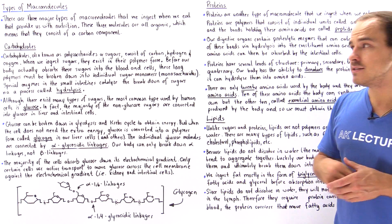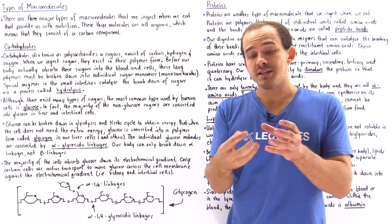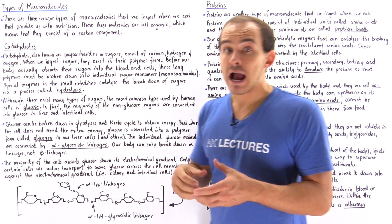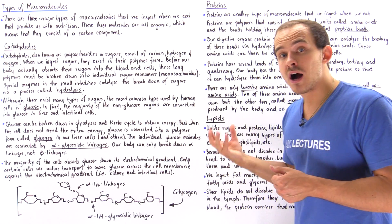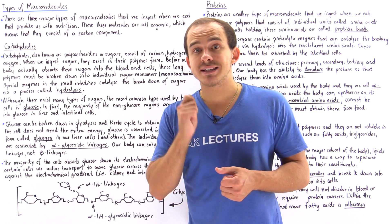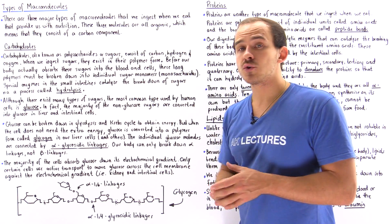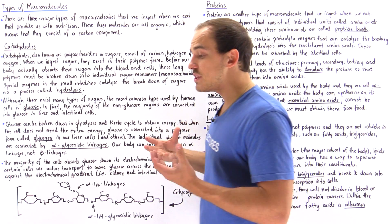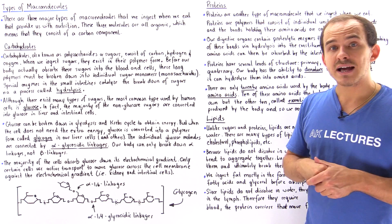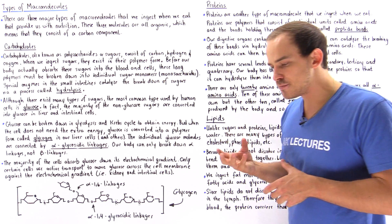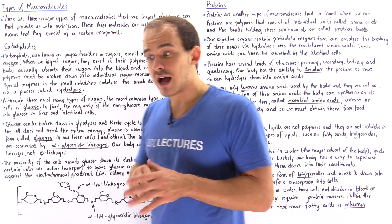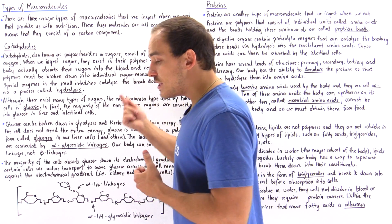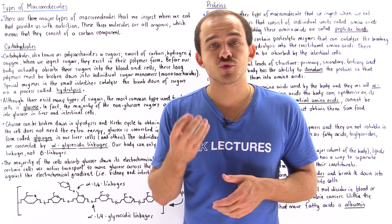Carbohydrates exist of connecting units we call monomers or monosaccharides. Before our body and our cells actually absorb these carbohydrates, we have to break down those carbohydrates — the polysaccharides — into their individual monosaccharides. Our body breaks down these long-chain carbohydrates by using specialized types of proteolytic enzymes that we're going to focus on in the next several lectures.